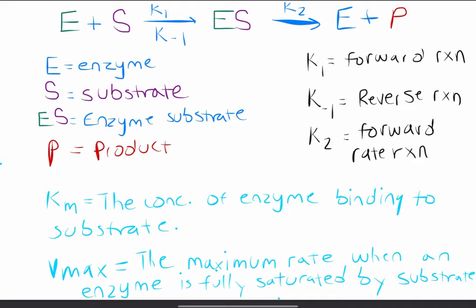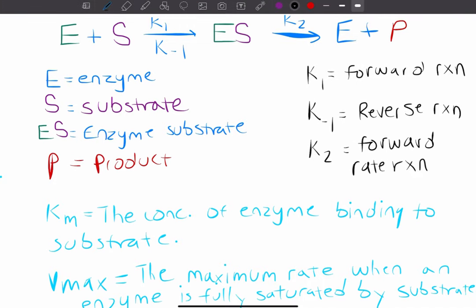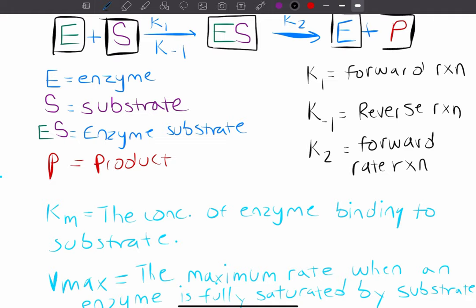Here we have a bunch of numbers, letters, and confusing stuff. I want to simplify this. We have E plus S — E is the enzyme and S is the substrate. When you have these two together, you form something called an enzyme-substrate complex. From there, the enzyme leaves and the ultimate goal of every reaction is to form that product. So enzyme plus substrate gives the enzyme-substrate complex, forming a product and the enzyme leaving — E plus P. This is called dissociation.